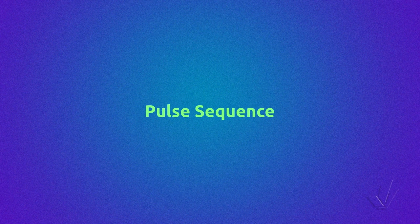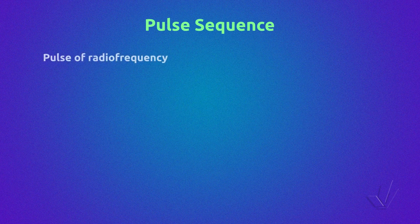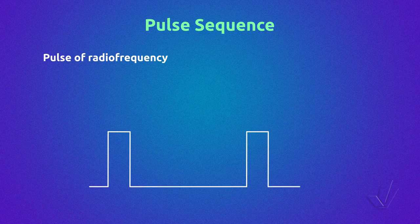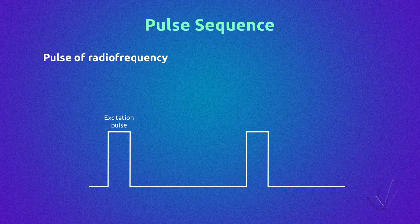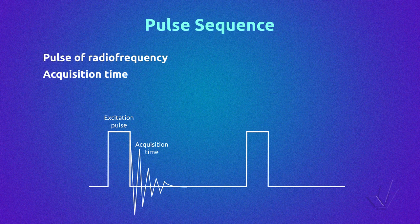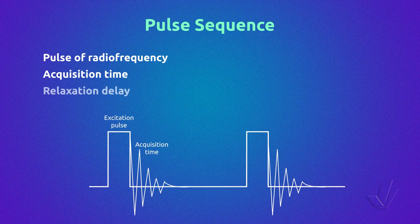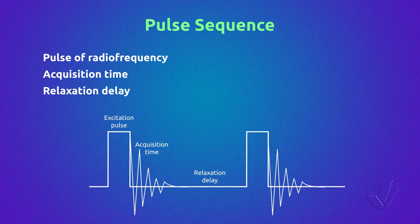The pulse sequence in NMR is composed of a pulse of radiofrequency to excite the nuclear spin from a lower energy state to an excited state, at an angle and time that can be programmed. Then an acquisition time — the time during which the free induction decay (FID) is collected in digital form on the computer — and a relaxation delay, which is the time during which the nuclei relax to restore the equilibrium population in both spin states.